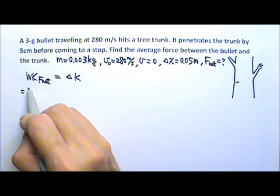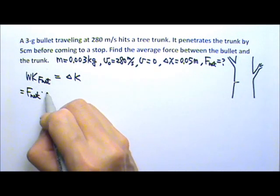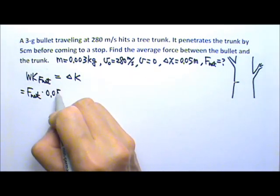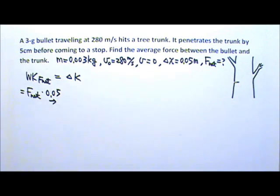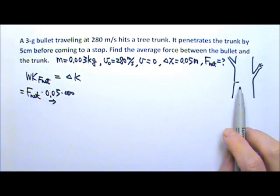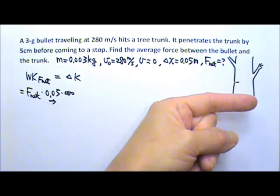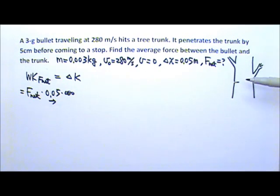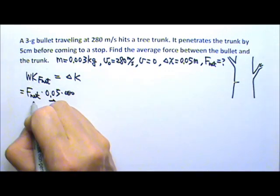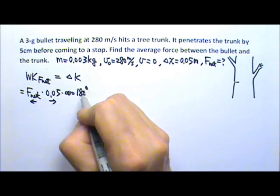The work done by the net force equals the net force times the displacement. The displacement is 0.05 meters to the right. We include the cosine of the angle between the force and displacement. The net force — when the bullet comes in and slows down, the acceleration is in the opposite direction, so the net force that stops the bullet must go to the left. Therefore the angle between the net force and displacement is 180 degrees.